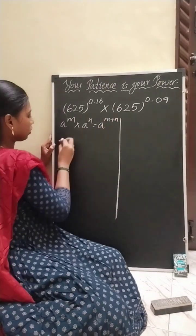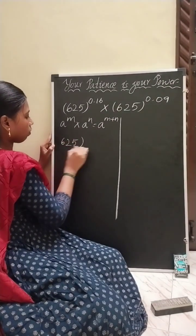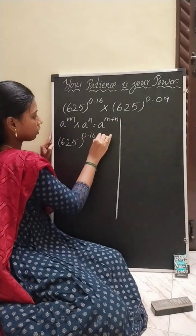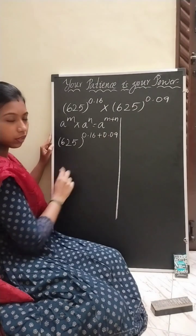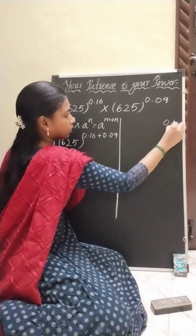So 625 to the power of (0.16 plus 0.09). 0.16 plus 0.09 will be 0.25.